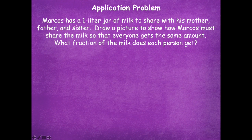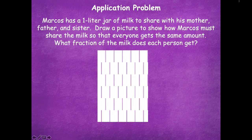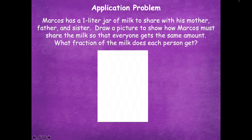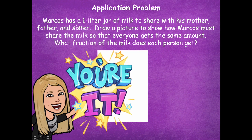First we're going to start with our application problem. It says: Marcos has a one-liter jar of milk to share with his mother, father, and sister. Draw a picture to show how Marcos must share the milk so that everyone gets the same amount. What fraction of the milk does each person get? Here's your jar of milk — you can draw it as a simple rectangle. Pause the video, partition your rectangle into equal parts so they each share the same amount, determine what fraction each person gets, then click play when you're ready.